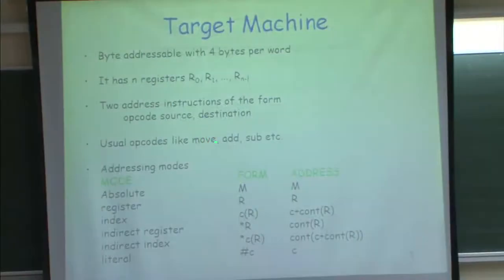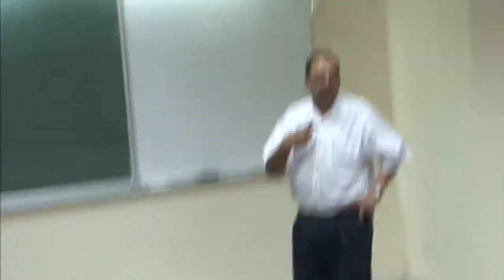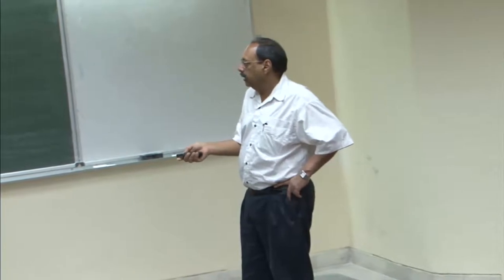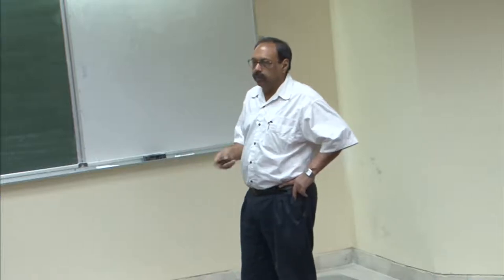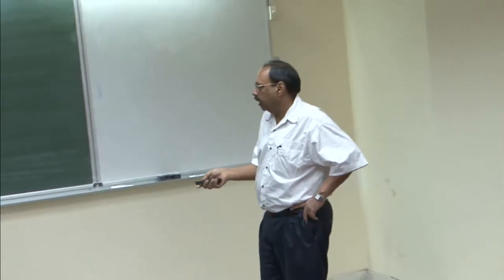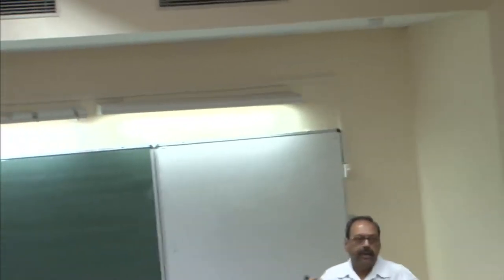Standard opcodes include move, add, subtract, and all arithmetic and logical operations. Addressing modes include: absolute (content of a memory location), register (value in a register), indexed (register plus constant offset fetched from memory), indirect register (register contains an address, fetch from that memory location), indirect indexed (one more level of indirection), and immediate (use a value directly, like add immediate 1).